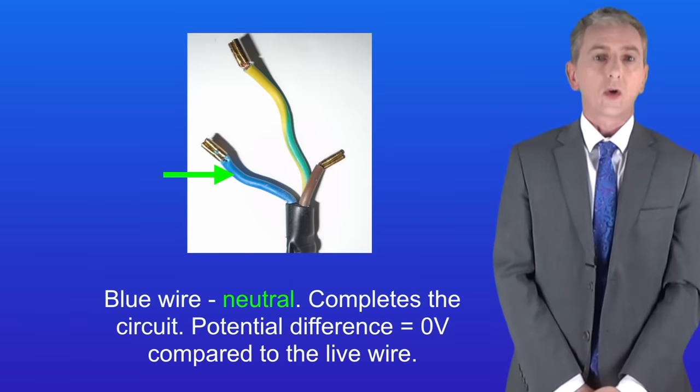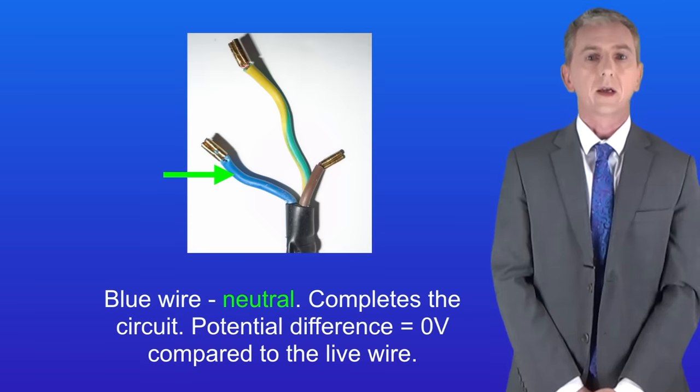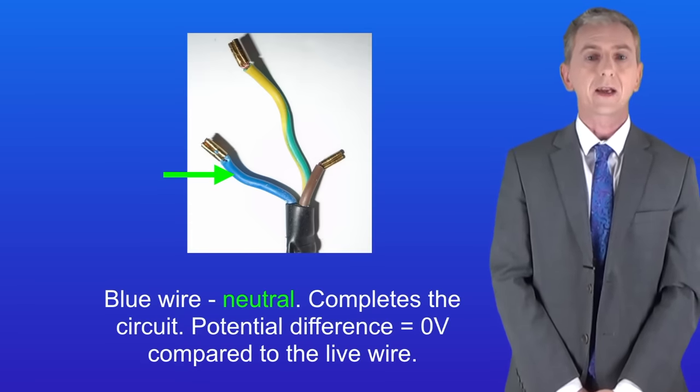The blue wire is called the neutral wire and this completes the circuit with the live wire. The potential difference of the neutral wire is around zero volts compared to the live wire.